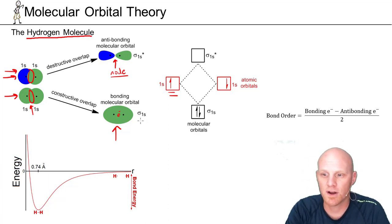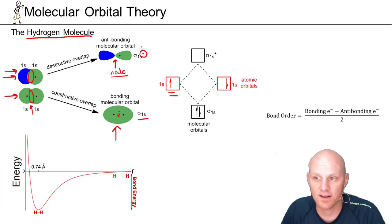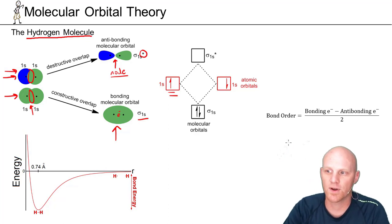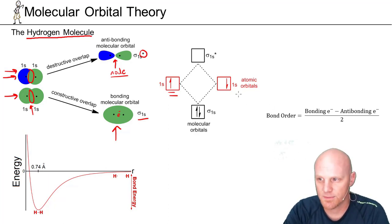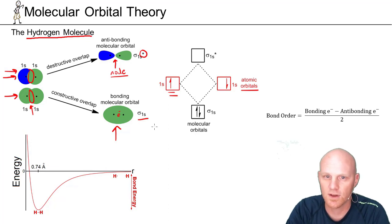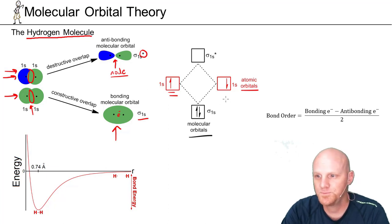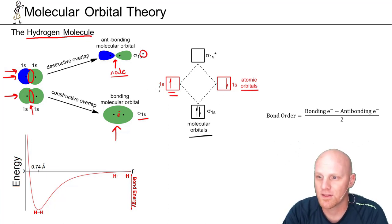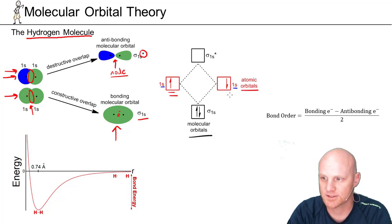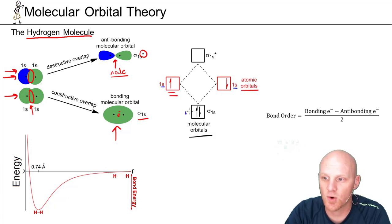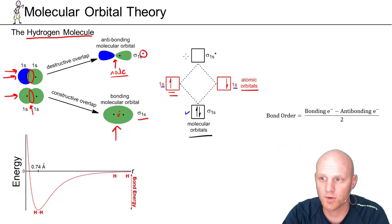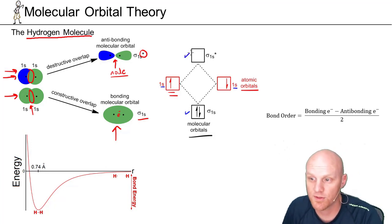The lower energy bonding molecular orbital is called the sigma 1s, and the antibonding gets an asterisk designation to indicate it's antibonding. In the energy diagram, before the two atoms come together, electrons exist in 1s orbitals. When they come together, those orbitals cease existing, and what you have is the lower energy sigma bonding molecular orbital and the higher energy sigma antibonding molecular orbital. Those 1s orbitals no longer exist.